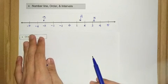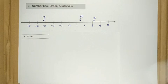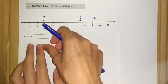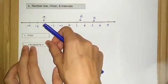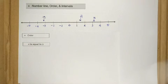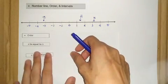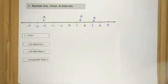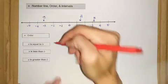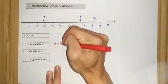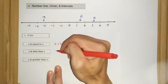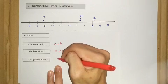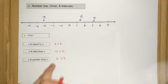And what about the order? The order must consist of three cases. The first one is what we call when A is equal to B. And for A is less than B, the notation is A less than B. And for the third case is A greater than B.